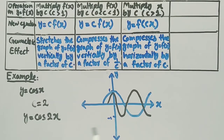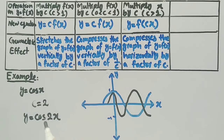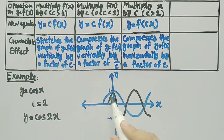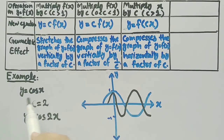The graph in black is the graph of cos(2x). Comparing the graph of cos(x) and cos(2x), the difference is that the graph of cos(2x) is compressed horizontally by a factor of 2 compared to the graph of cos(x).